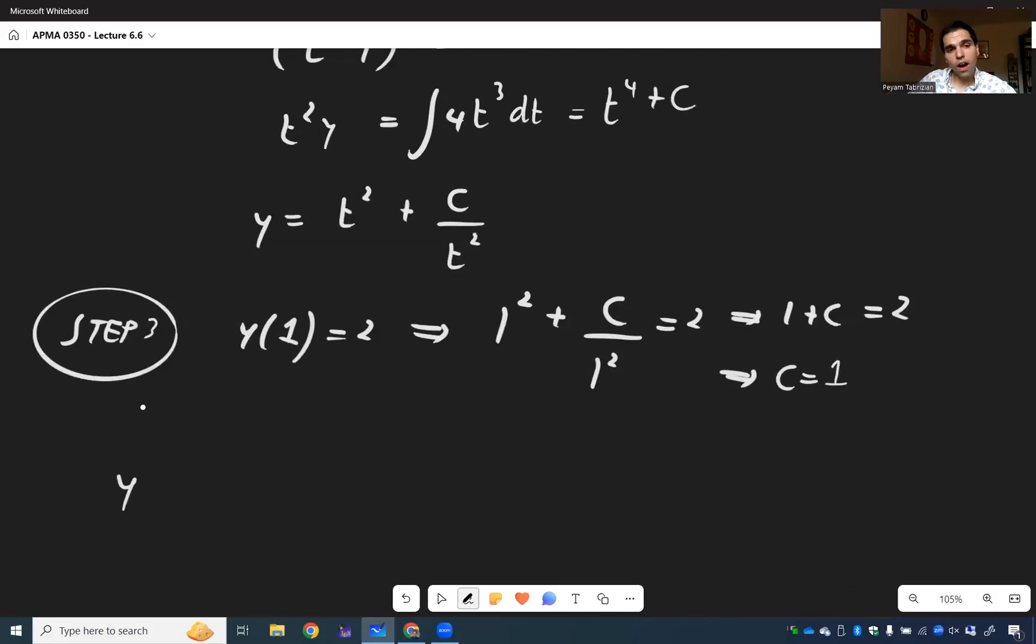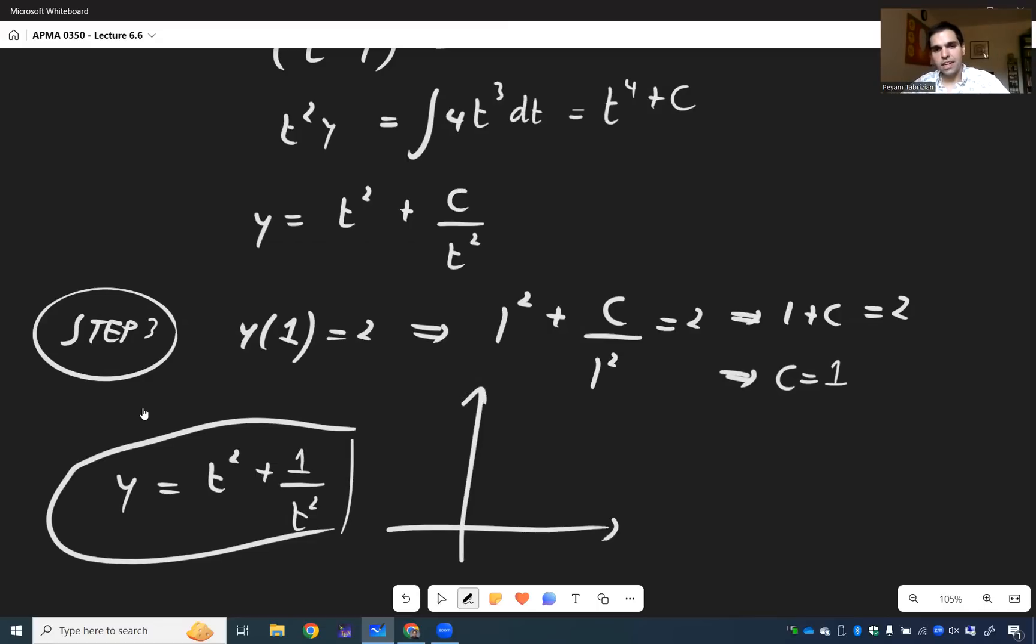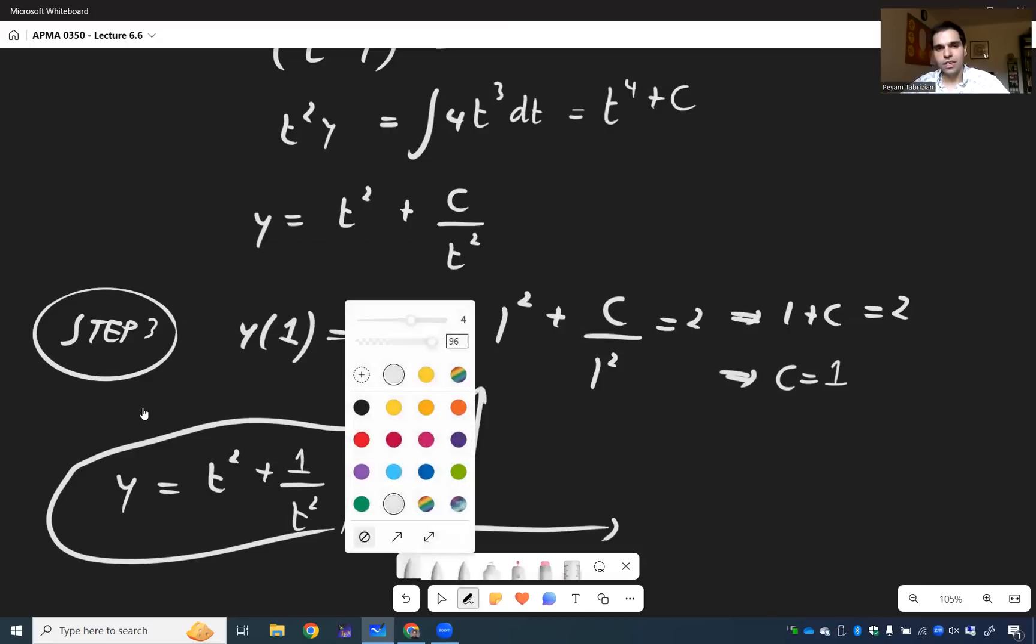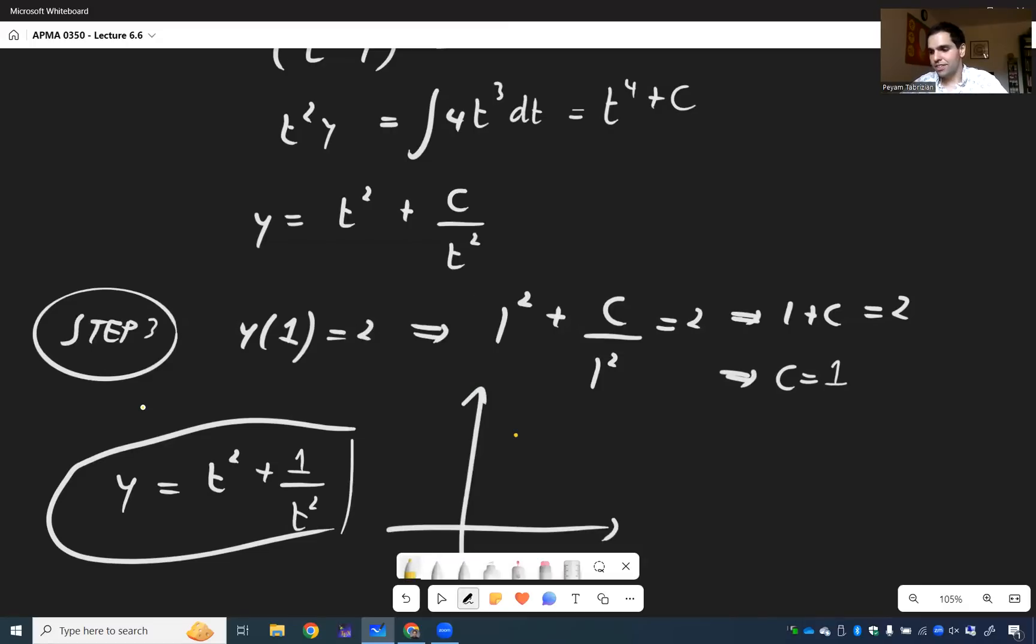And therefore, we have our solution, y equals t squared plus one over t squared. Which, if you're interested, just looks like this blob, maybe. Technically has two branches, but the one that has the initial condition is this one. That is one, that is two.